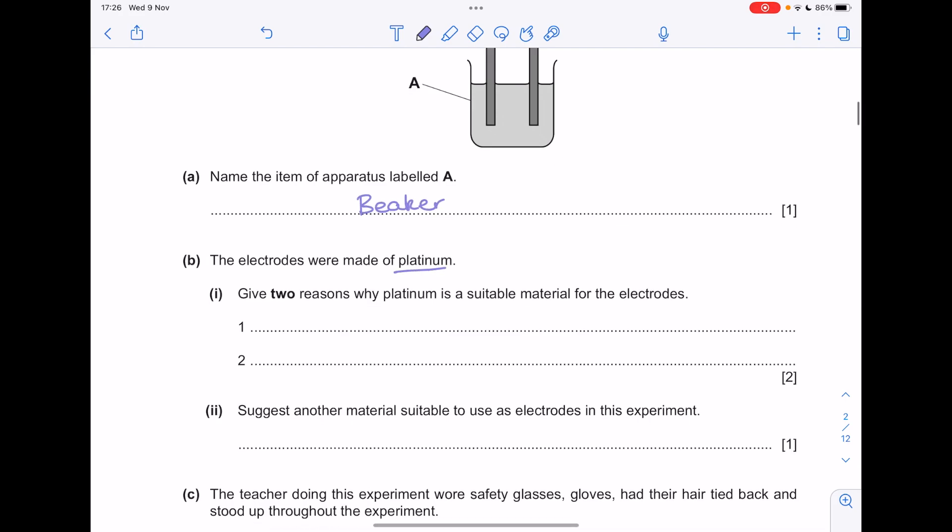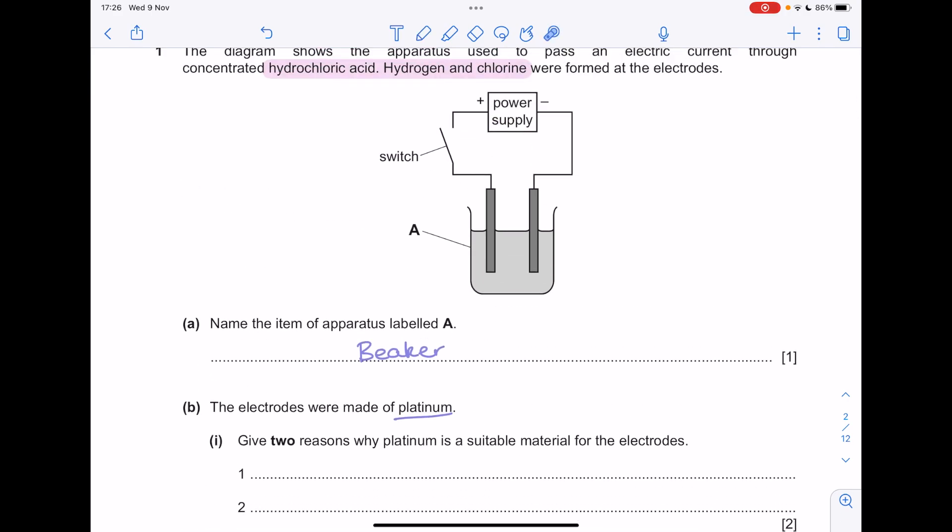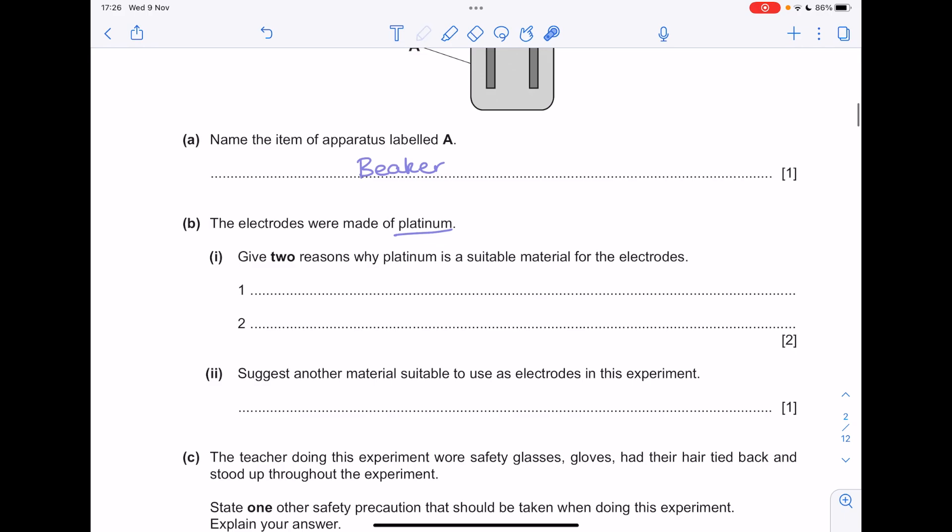The electrodes are made out of platinum. They give two reasons why platinum is a suitable material for the electrodes. First of all, you need something which can carry a current. That's why platinum is good because of the delocalised electrons. Secondly, you need a really unreactive metal. Hence why platinum is a good option.